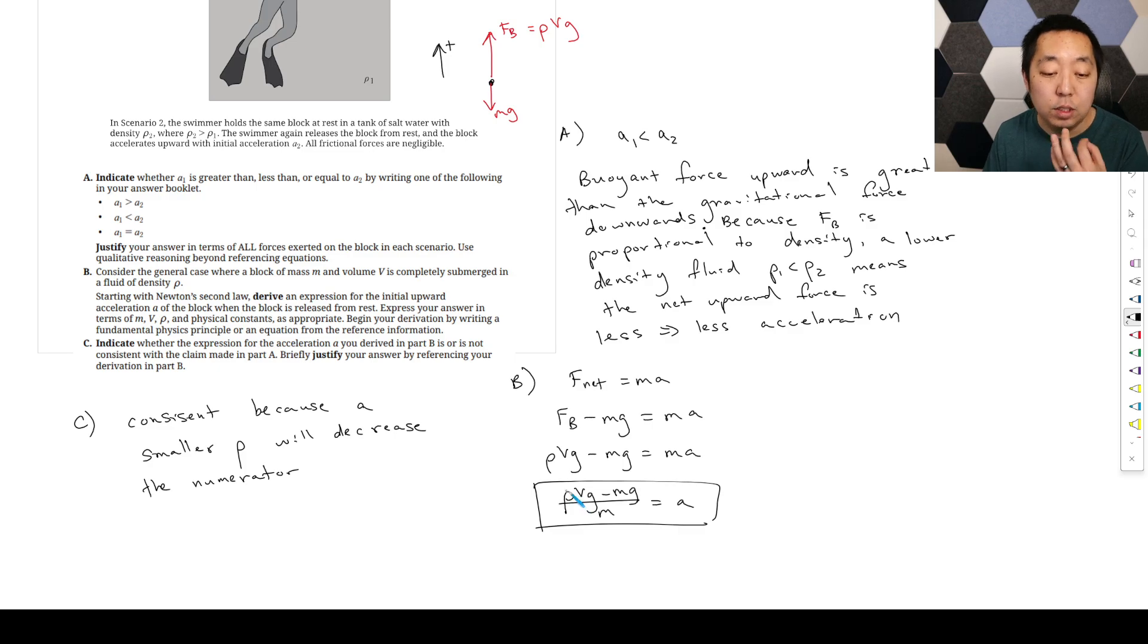So smaller - everything else being the same - smaller rho is going to decrease the numerator and cause a smaller acceleration. That's all you have to say. Nothing too fancy on that one. Just the functional dependence of this equation and how it relates to parts A and B.